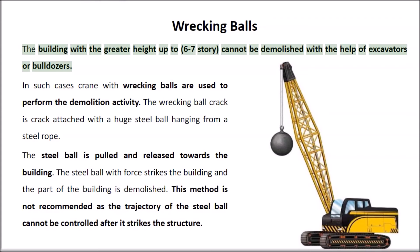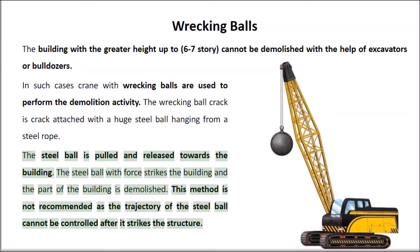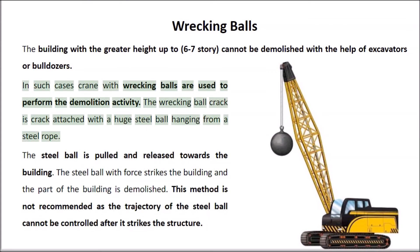Buildings with greater height, up to six to seven stories, cannot be demolished with the help of excavators or bulldozers. In the wrecking ball method, a steel ball is pulled and released towards the building. The steel ball strikes the building with force and part of the building is demolished. However, this method is not recommended as the trajectory of the steel ball cannot be controlled after it strikes the structure. In such cases, a crane with a wrecking ball is used — a huge steel ball hanging from a steel rope.